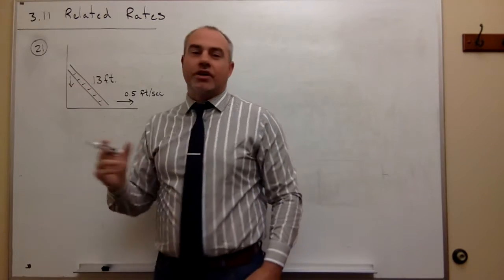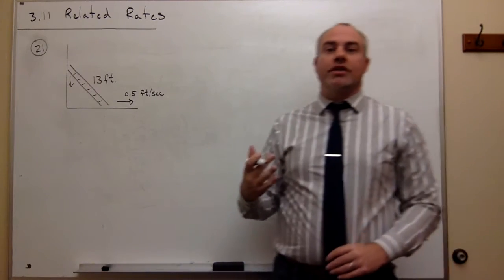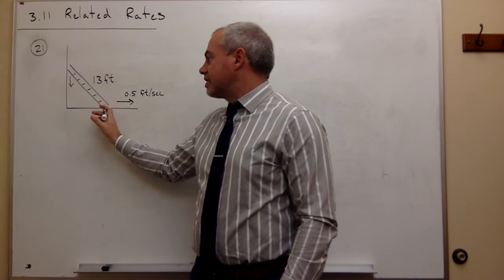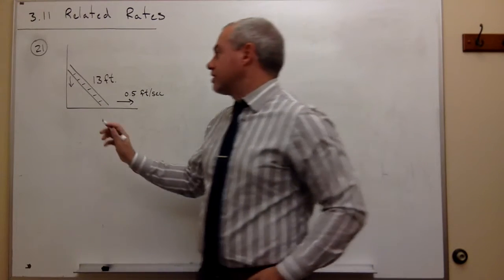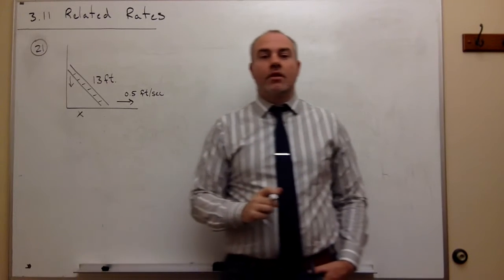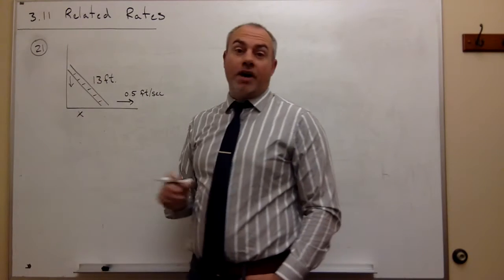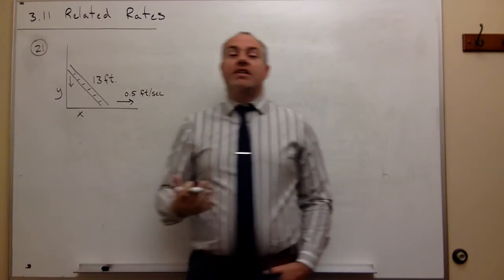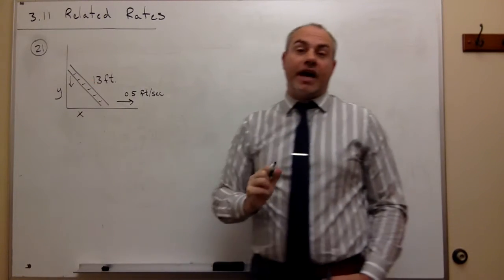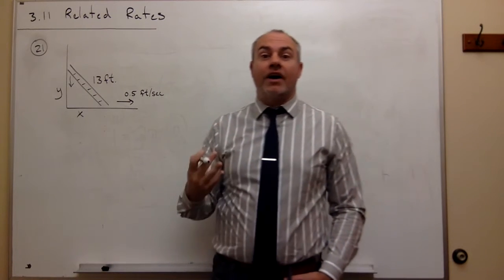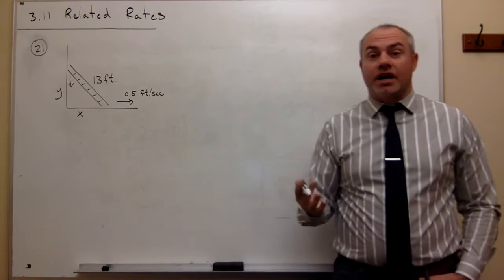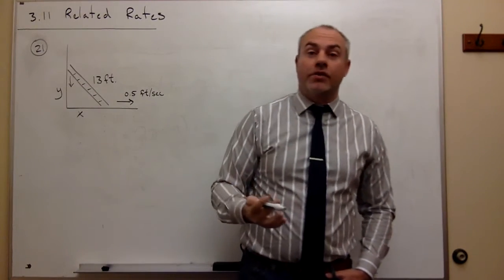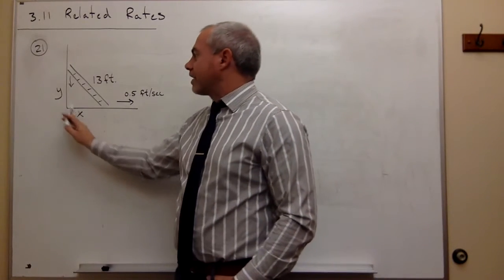We need to assign variables to the things that are changing. One thing changing is the distance from the foot of the ladder to the wall — let's call that x. The other thing changing is the distance from the ground to the top of the ladder — let's call that y. A mistake would be to assign a variable to the length of the ladder. The length is never changing, and if a value never changes in a related rates problem, you don't assign a variable to it. The 13 is fixed, so we don't give it a variable.